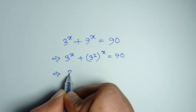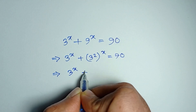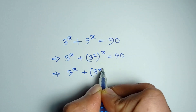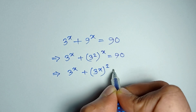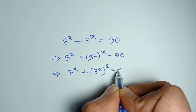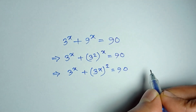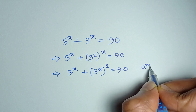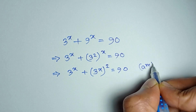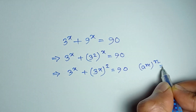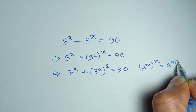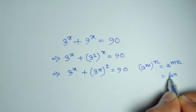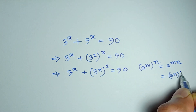Or, 3 to the power x plus 3 to the power x, whole square, is equal to 90. As we know, a to the power m, whole to the power n, is equal to a to the power mn, which is equal to a to the power n, whole to the power m.